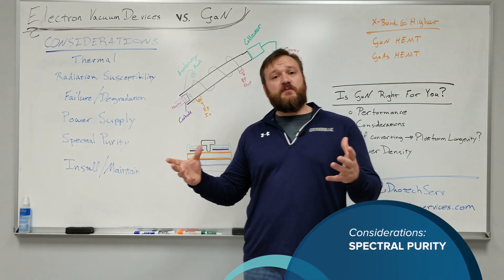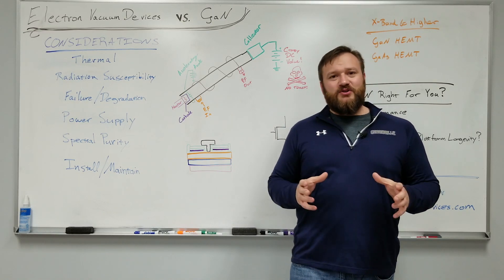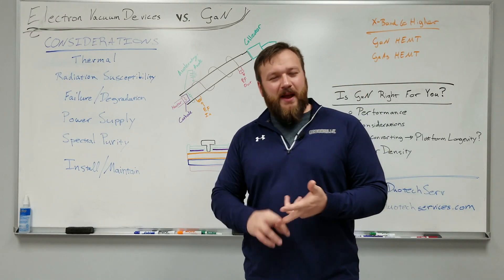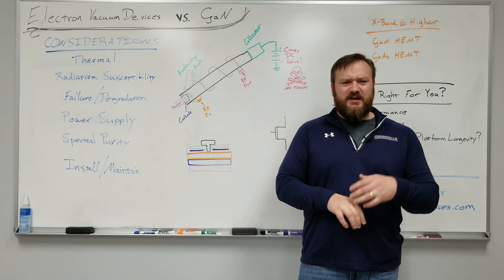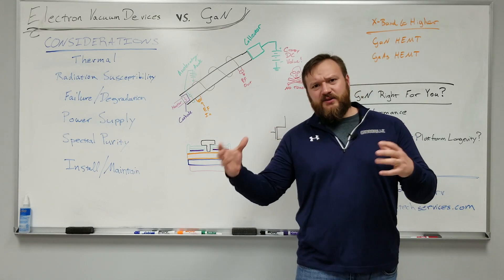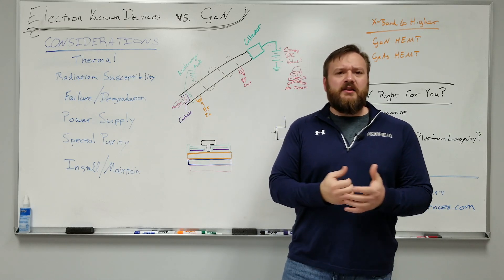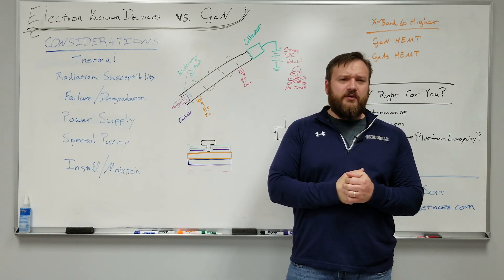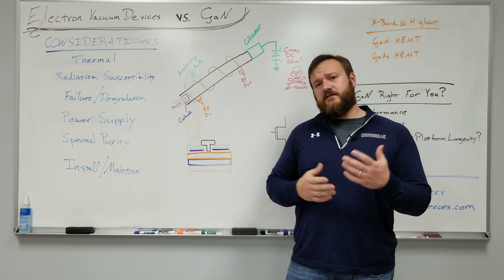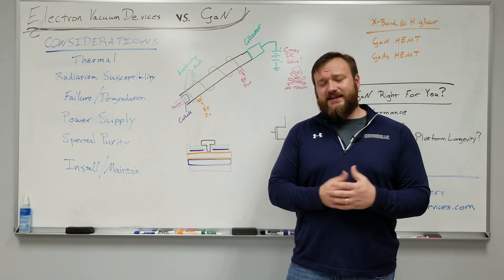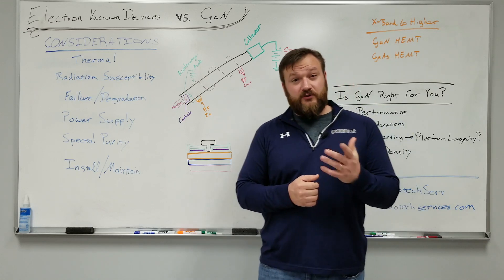When it comes to output spectral purity — without going into exactly how a TWT or magnetron works, or the difference between a coupled-cavity and a helical TWT — modern gallium nitride devices have a clear superiority advantage over the spectral purity of traveling wave tubes. That's something we really take advantage of in our Nemesis and Delta radar families.